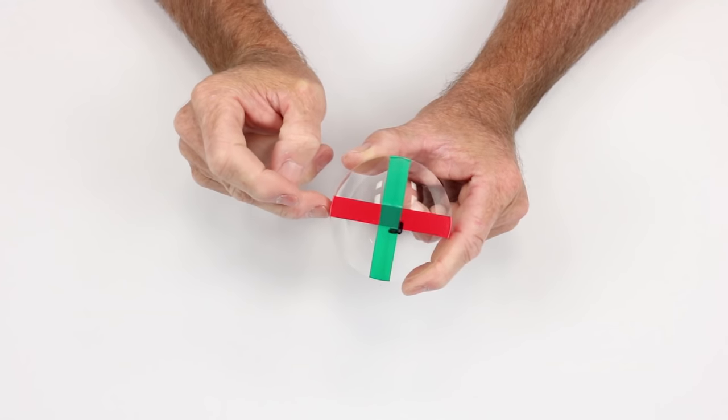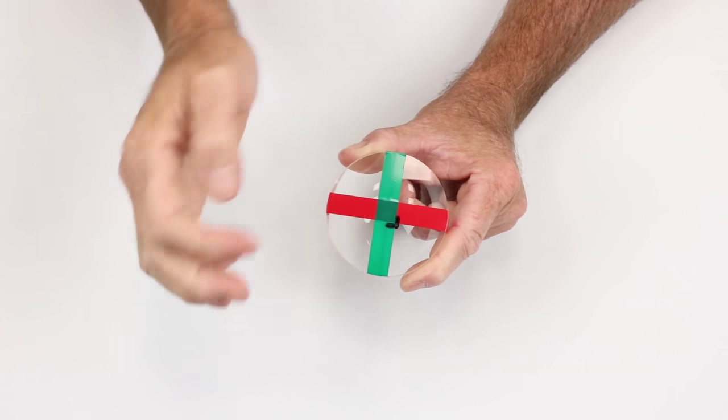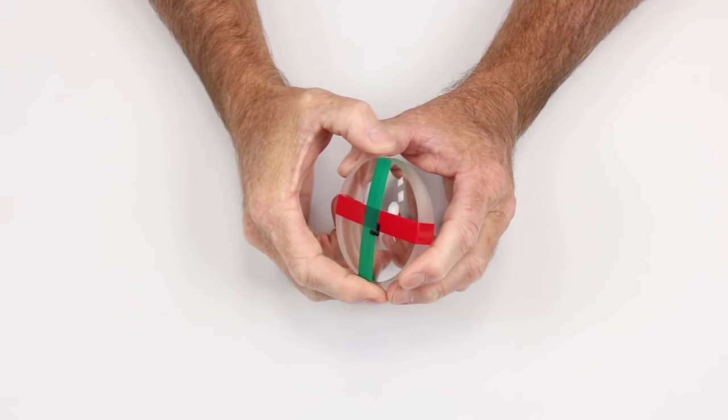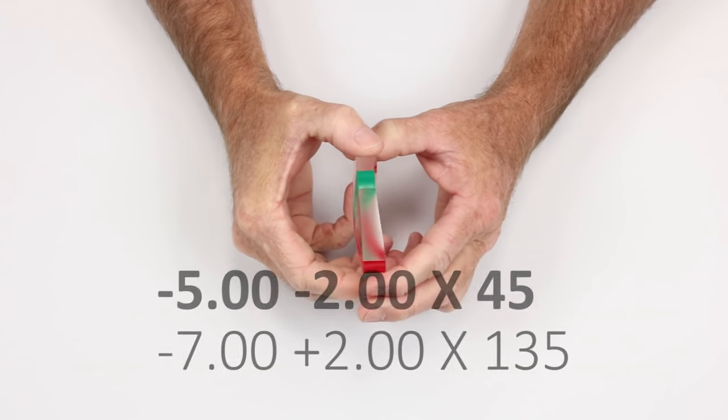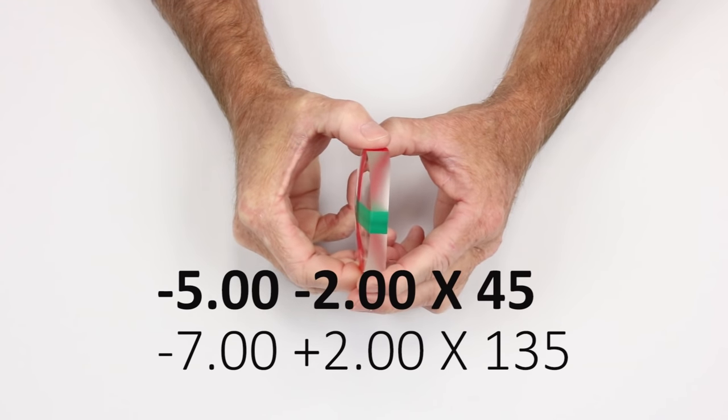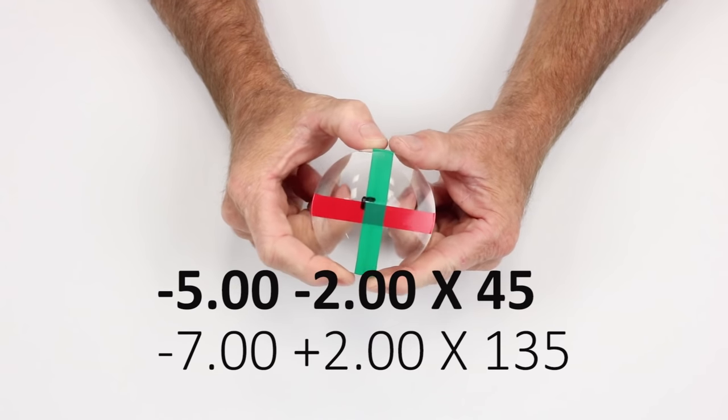I've taken this lens and I've divided it into two bands, a green band and a red band. For the sake of this project, we're going to say that this lens is a minus five, minus two, and we're going to put an axis of 45 on it. But that's not really going to be important until a little bit later when we hit the whiteboard.